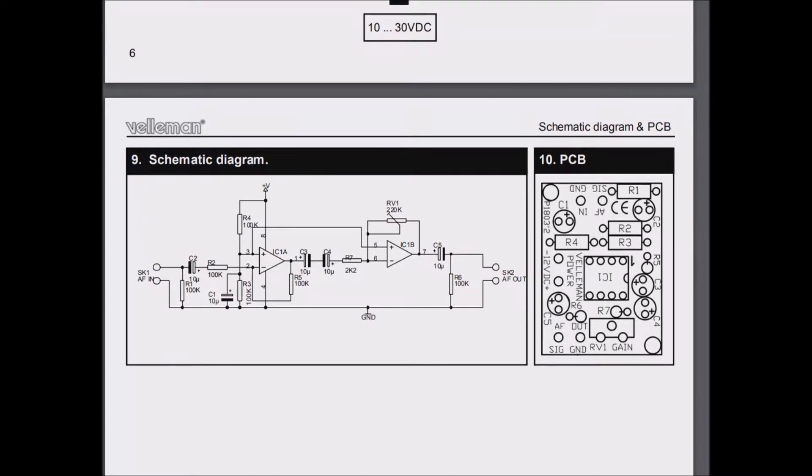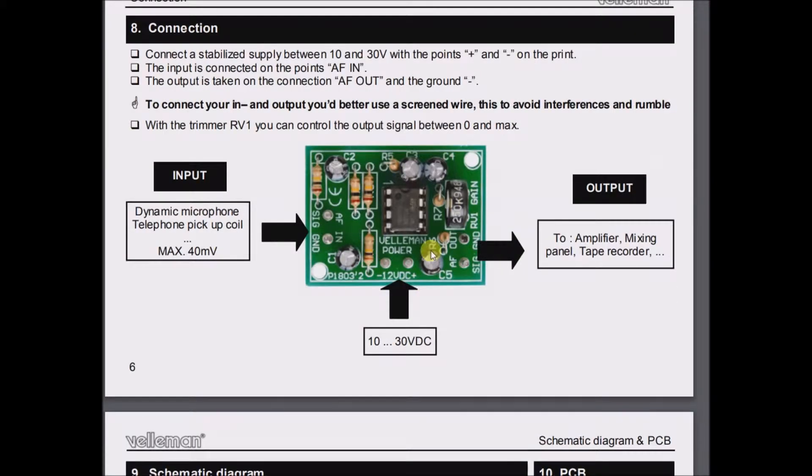Now, this is worth mentioning. This R1 trimmer here is this trimmer here, 250K. And this is on the output to your speakers or to another amplifier or mixing panel.